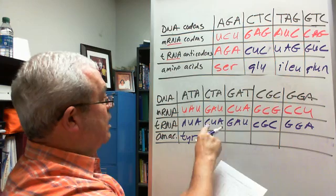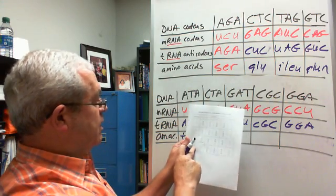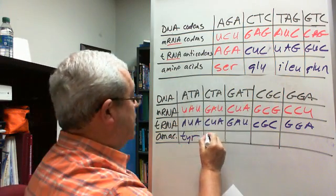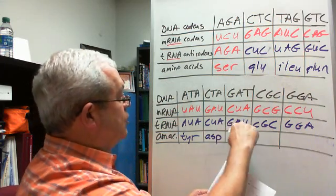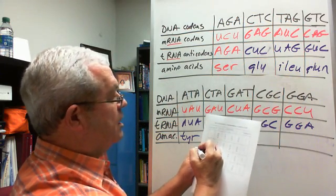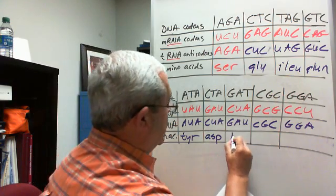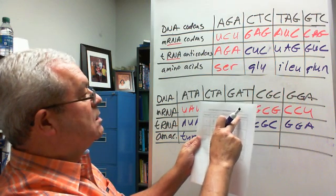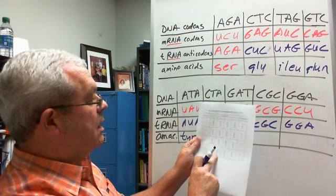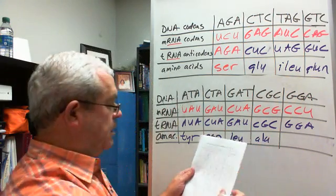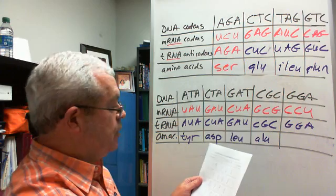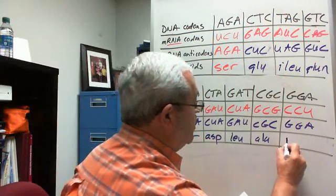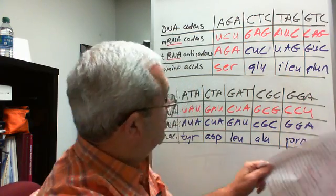And then we have anticodon CUA. Here's C down here, first base C, second base U, third base A. And so I see an ASP. ASP. And then GAU. G, A. It doesn't matter what the third one is there. That's going to be LEU. And then C, G, C. First base C, second base G. C, G, and then C. Doesn't make any difference with that one either, what the third base is. And finally, G, G, A. G, first base G, second base G. That one doesn't make any difference either, the third base. Let's see if I got these right.